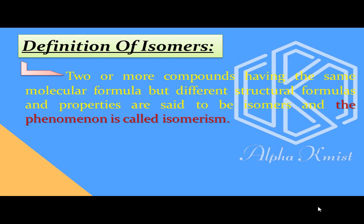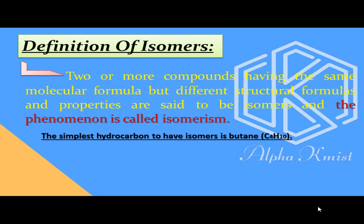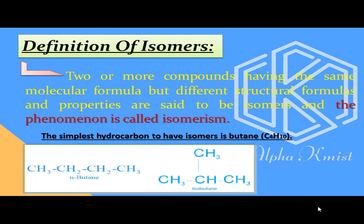Properties میں ہمارے پاس chemical properties اور physical properties آئیں گے۔ Chemical properties میں یہ کہ وہ molecule دوسرے molecules کے ساتھ کیسے behave کرتا ہے، اور physical properties میں melting point، boiling point، اور color شامل ہیں۔ The simplest hydrocarbon to have isomers is butane — C4H10 — جس کے دو structural formulas: n-butane اور isobutane دکھائے گئے ہیں۔